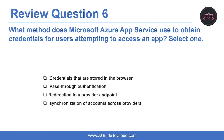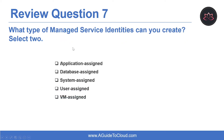Question six: what method does Microsoft Azure App Service use to obtain credentials for a user attempting to access an app? The correct answer is redirection to a provider endpoint. Azure App Service apps redirect requests to an endpoint that signs in users for that provider. The App Service can automatically direct all unauthenticated users to the endpoint that signs in users.